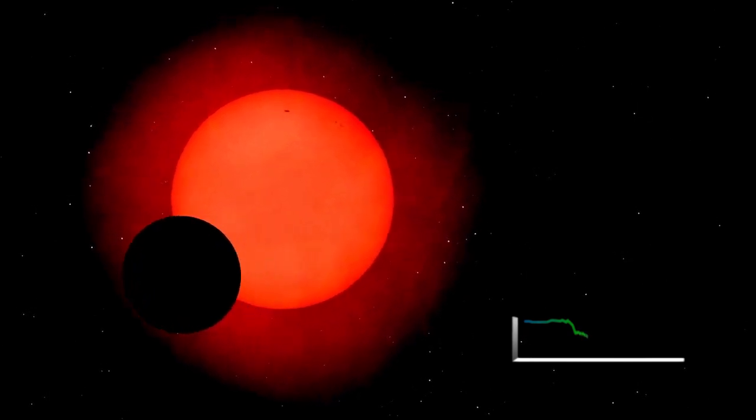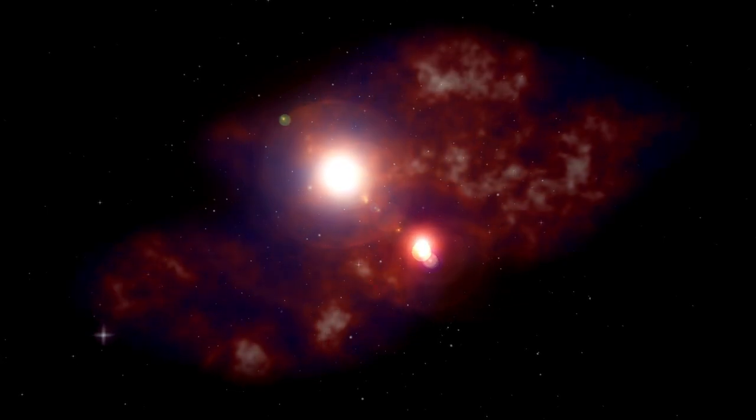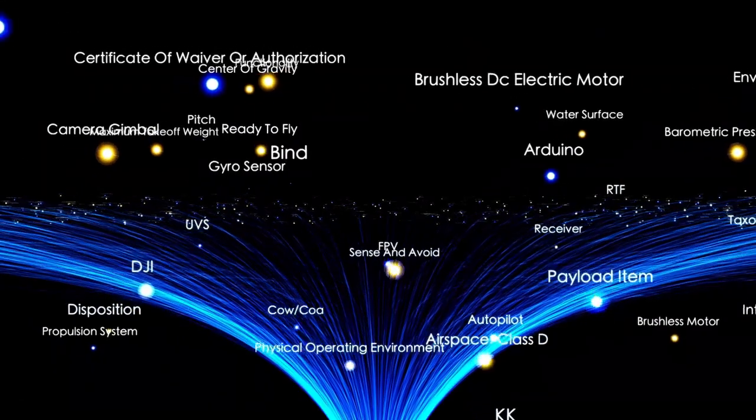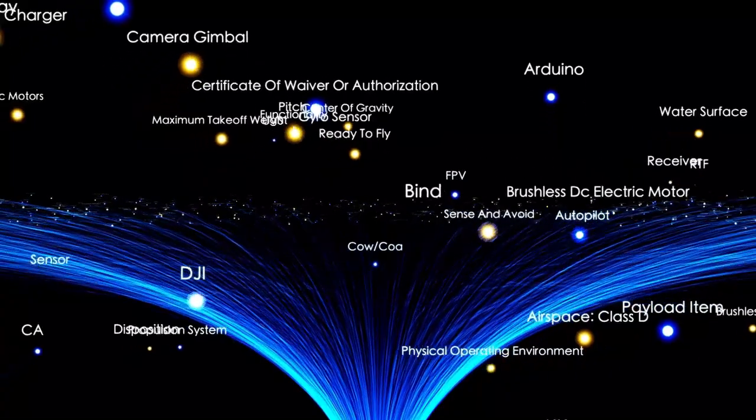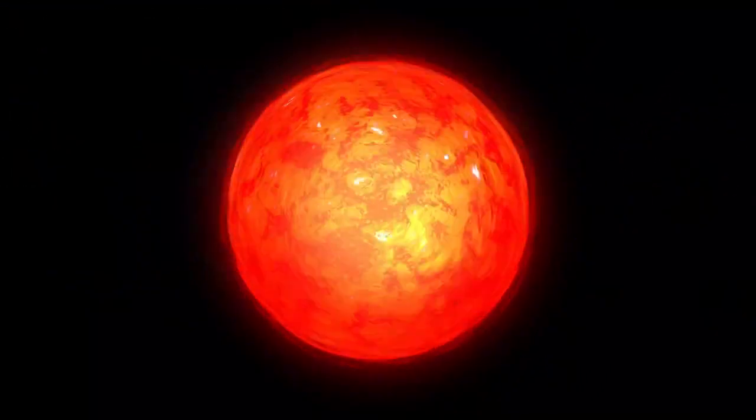It's estimated to be about 700 times the size of the Sun and over 10,000 times more luminous. Red supergiants like this are known for being unstable as they approach their final stages, with fluctuations in brightness being relatively common.